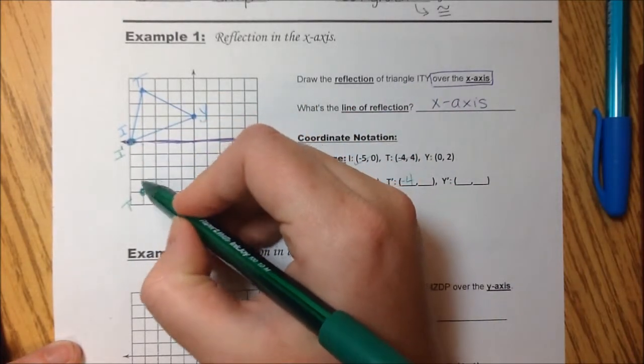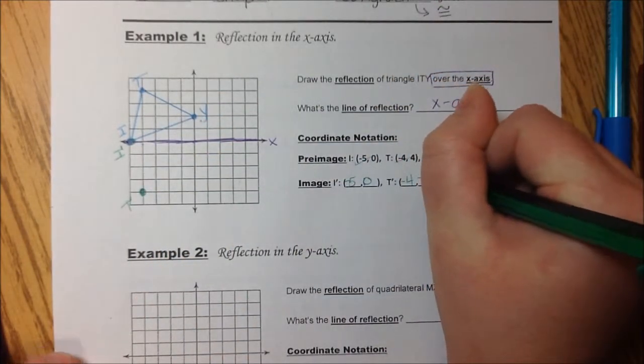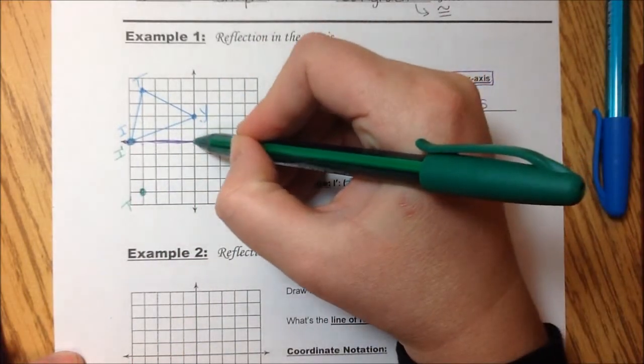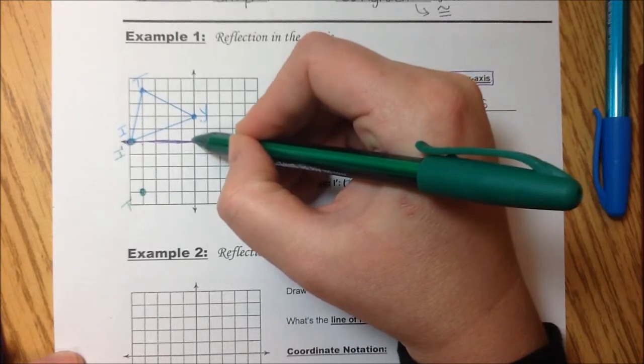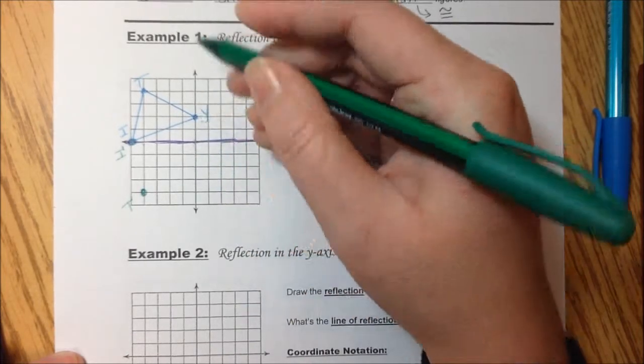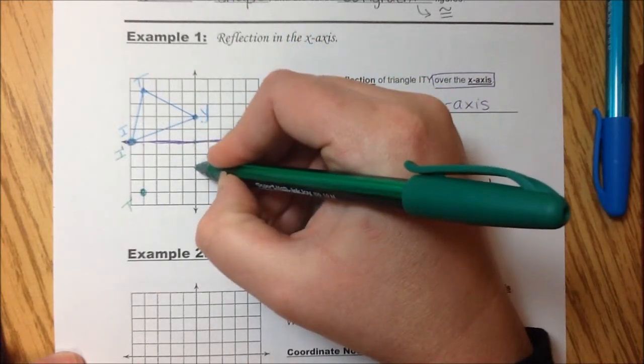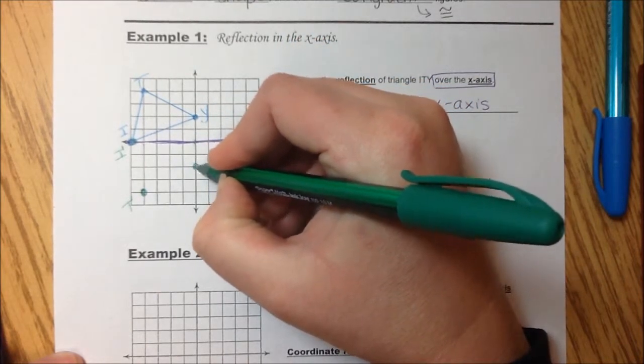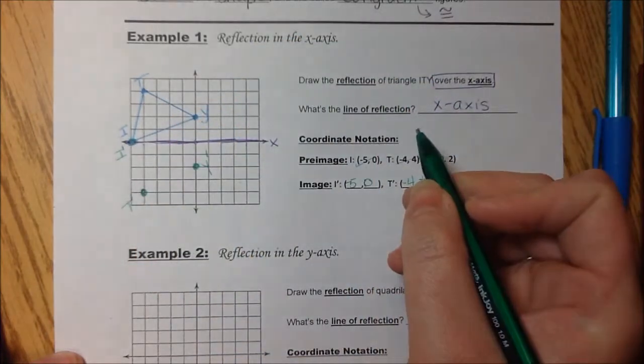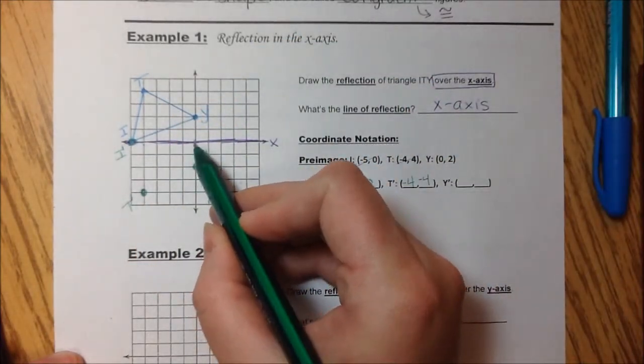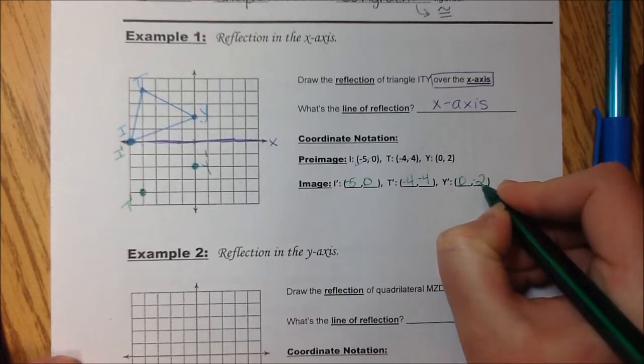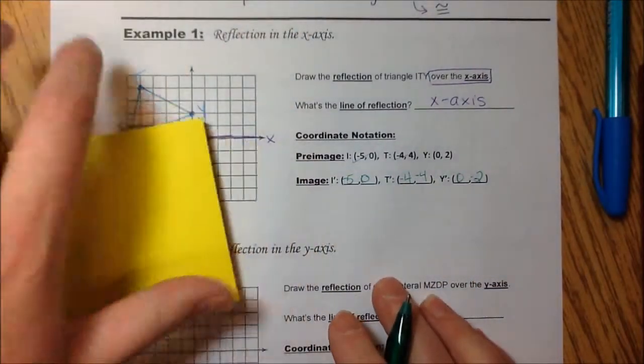And then Y, again, is still going to stay on the same x value. But it's going to come 2 down because it's 2 up. So we're going to flip it over this line. And that's where it would land. Y prime. Do not forget your primes. And it is 0, negative 2. Okay. Again, connect your points.